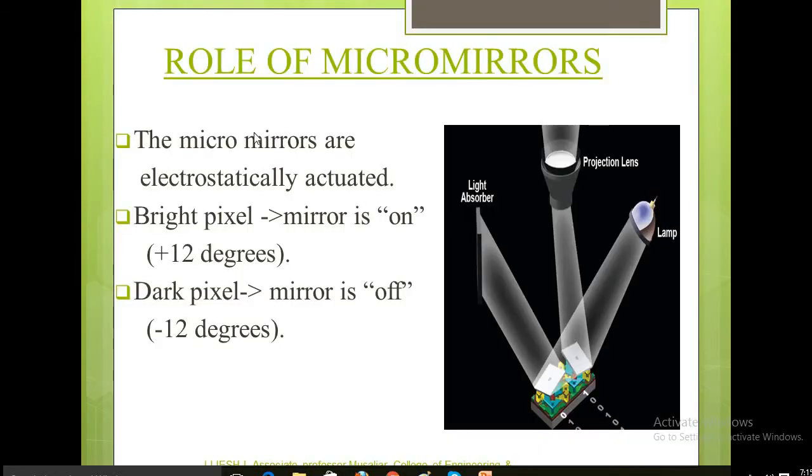This is the structure of a micromirror array, and here each one is a micromirror. The mirrors are made out of aluminum and are around 16 micrometers across, and this shows the roll of micromirrors.